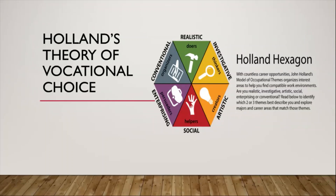The fifth personality type is the enterprising personality type — these are the persuaders. These individuals are concerned with power and having status; they tend to be on the more dominant side, talk very well, are very persuasive, and more direct. They're usually skilled leaders. The sixth personality type is the conventional personality type — these are the organizers. They tend to follow the rules, like structure and routine, respect authority, are very punctual, and exhibit a lot of self-control.